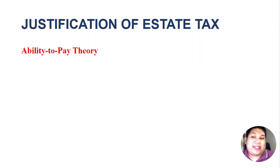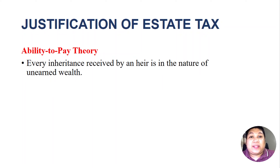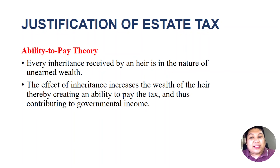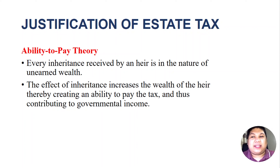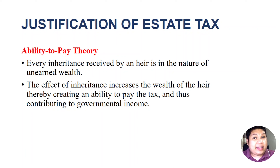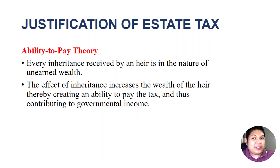The last theory is the ability to pay theory. Under this theory, every inheritance received by an heir is in the nature of unearned wealth. When someone receives an inheritance, it will add value to their equity and increase their wealth. Therefore, the effect of inheritance increases the wealth of the heir, thereby creating an ability to pay the tax and contributing to governmental income. The main contention is that when someone is more able to pay the tax, then he should be taxed. Becoming able to pay the tax would mean contributing something to the government. Those are the four theories which justify the imposition of estate tax.